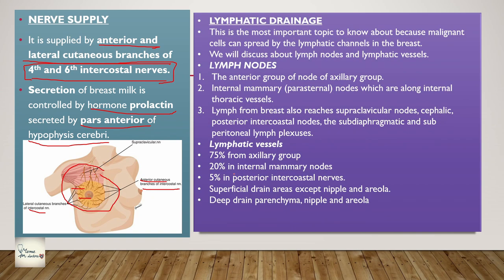Coming to lymphatic drainage - this is a very important topic you should not neglect. When you come to the clinical side, you will see how cancer spreads, as one of the routes of metastasis is by lymphatic drainage. Malignant cells can spread by lymphatic channels. The lymph nodes include the anterior group of nodes (lateral and anterior group), which drain into the axilla. The internal mammary nodes, also called parasternal nodes, run along the internal thoracic vessels and are one of the important node groups.